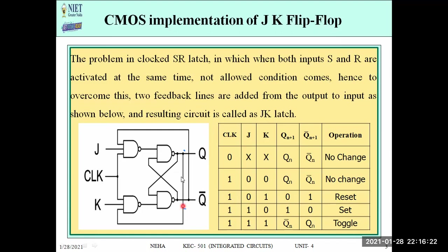Two feedback lines are used here. The problem is that when we give the same input (both high), the output becomes invalid. To solve that condition, we use the JK flip-flop. When both inputs S and R are activated at the same time, a not-allowed condition arises. Hence, to overcome this, two feedback lines are added from the output to the input, and the resulting circuit is called a JK latch.